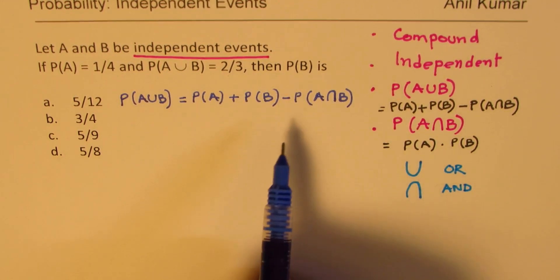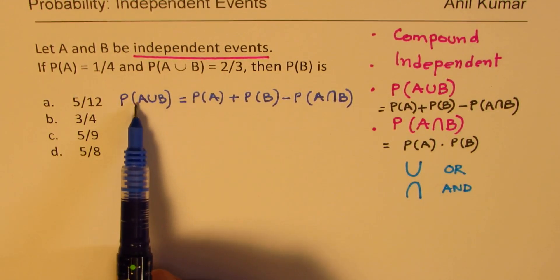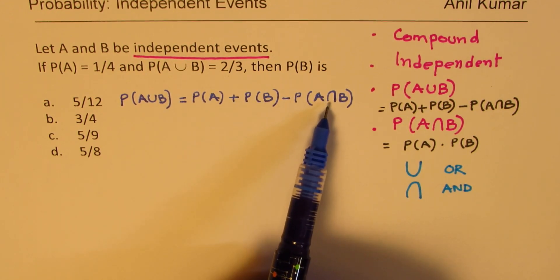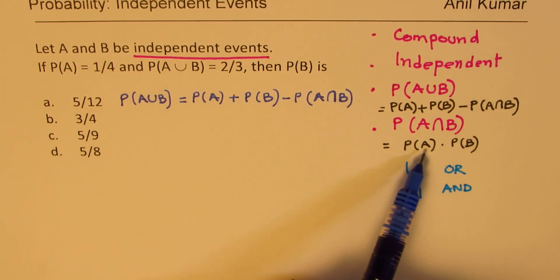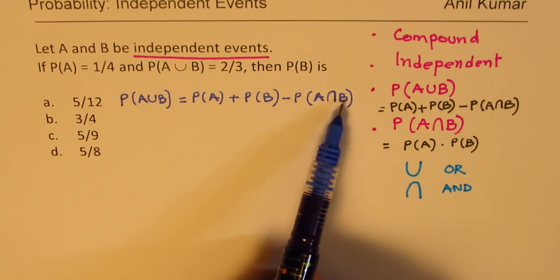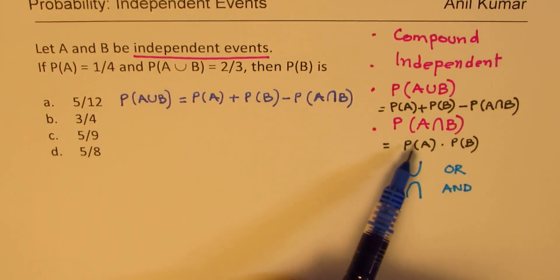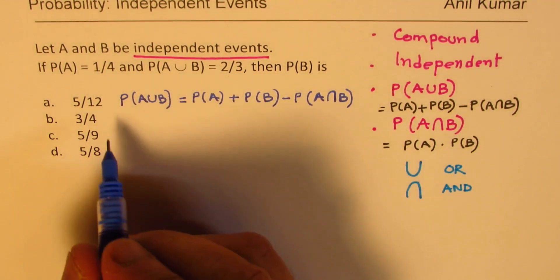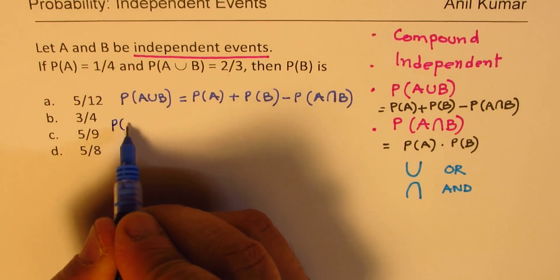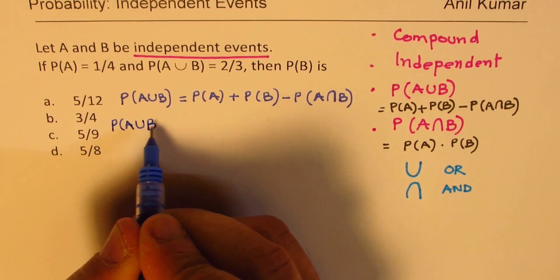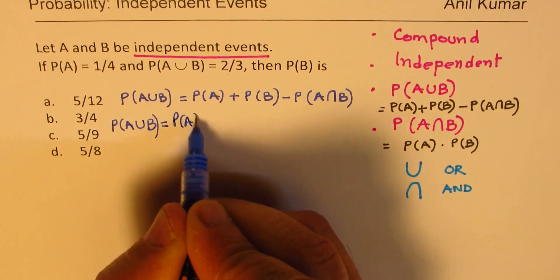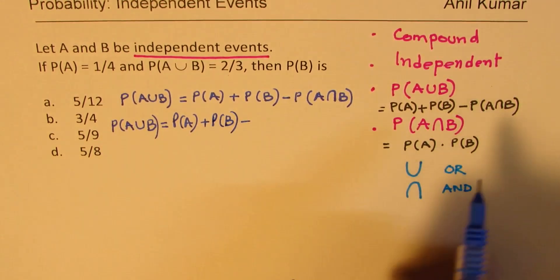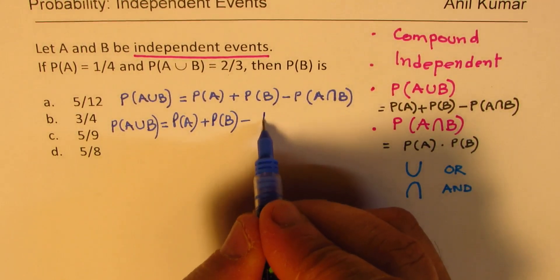So, now, I know probability of A union B, I know A, I don't know this and I don't know that also. But I have this formula with me. I can actually use this formula to help. Then I will have only one type of variable, that is probability of B. Let's do that. We can say probability of A union B is basically equal to probability of A plus probability of B, take away product of these two probabilities.